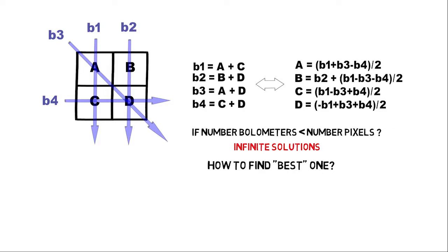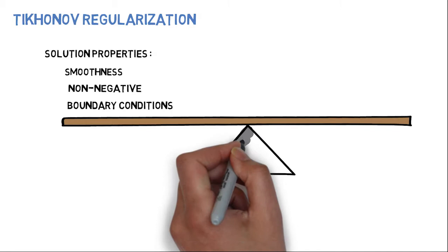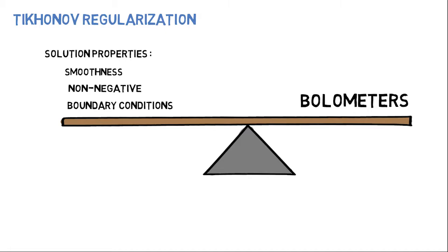We might say that we want the solution to be smooth, meaning neighboring pixels should have similar values. Also, physically, it makes no sense for pixels to have negative values and for radiation to come from outside the vacuum chamber. Tikhonov regularization will then use this a priori knowledge to find the solution that best balances this info and the measurements from the bolometers. It is, of course, necessary to understand which conditions are valid and how to balance them.